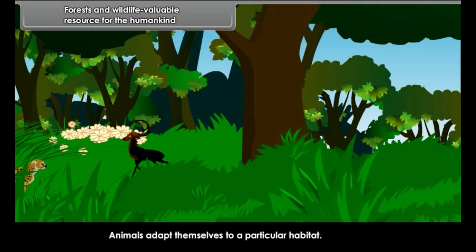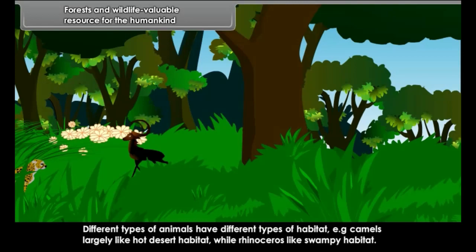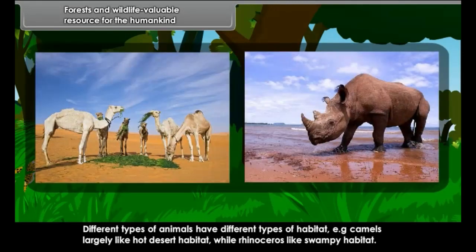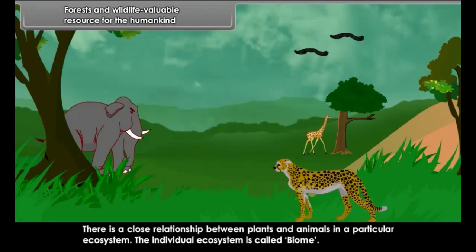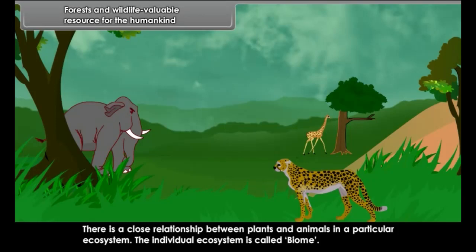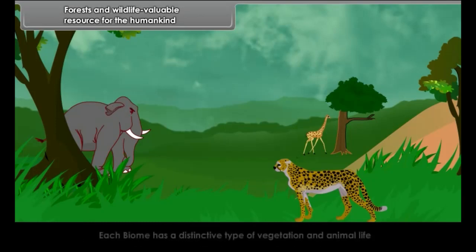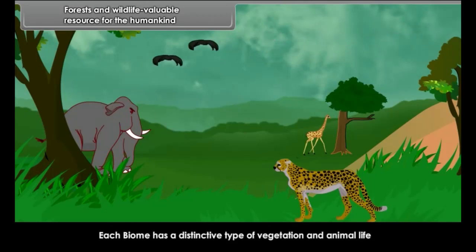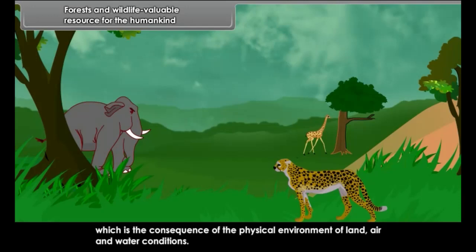Animals adapt themselves to a particular habitat. Different types of animals have different types of habitat — for example, camels largely prefer hot desert habitat while rhinoceros prefer swampy habitat. There is a close relationship between plants and animals in a particular ecosystem. The individual ecosystem is called a biome. Each biome has a distinctive type of vegetation and animal life, which is the consequence of the physical environment of land, air and water conditions.